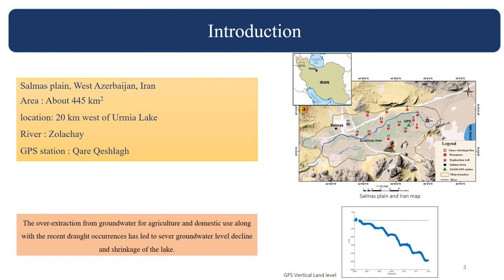Salmas Plain, with an area of about 445 square kilometers, is located 20 kilometers west of the Orumiye Lake in the West Azerbaijan in Iran. Salmas Aquifer is one of the coastal aquifers flowing into Orumiye Lake. A GPS graph shows a significant land displacement in Salmas Plain from 2006 to 2012, which is a sign for us to discover subsidence reasons in this area. We also know that over-extraction from groundwater in this area caused a significant groundwater level decline.